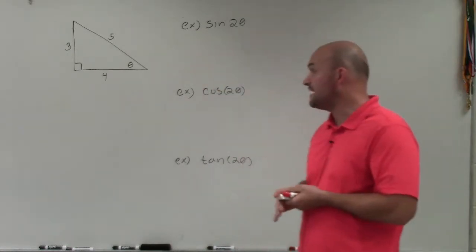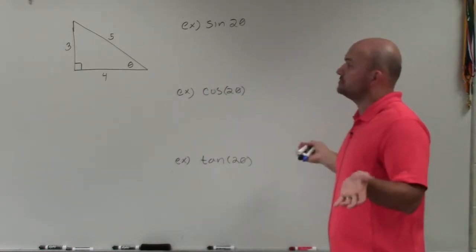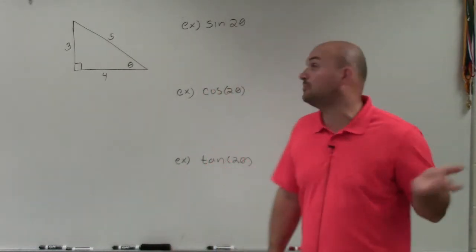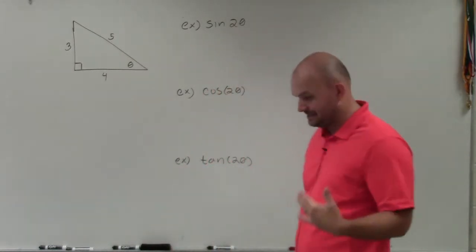What we have here is a right triangle, and we're given the side lengths of 3, 4, and 5. And what we want to do is evaluate for the double angle for sine, cosine, and tangent.